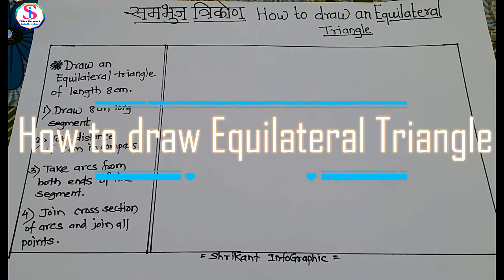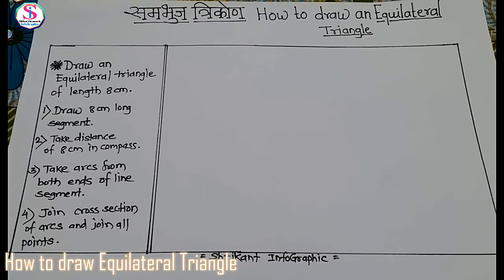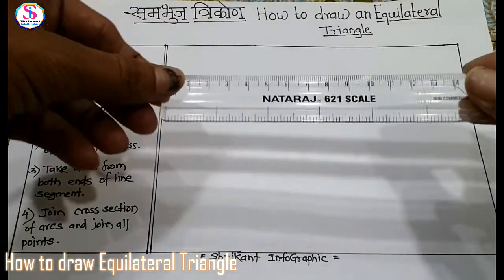In our playlist of geometry, today we learn about how to draw an equilateral triangle. We have to draw a triangle of length 8 cm, so first we have to draw an 8 cm long segment. Watch it carefully.